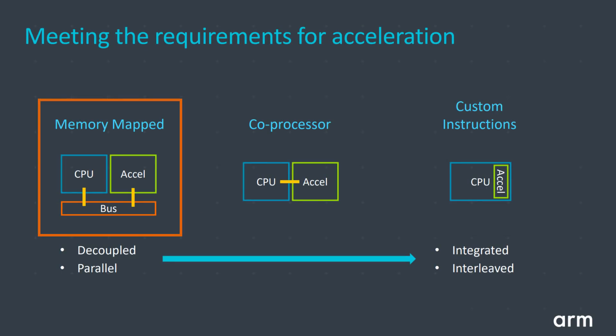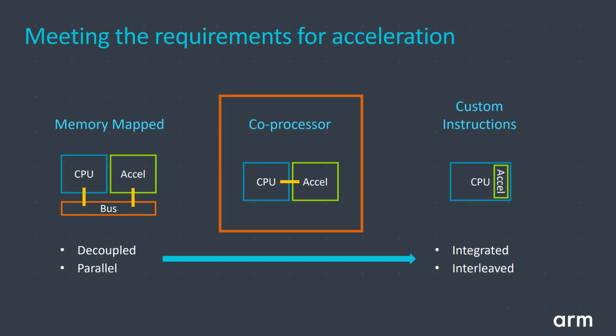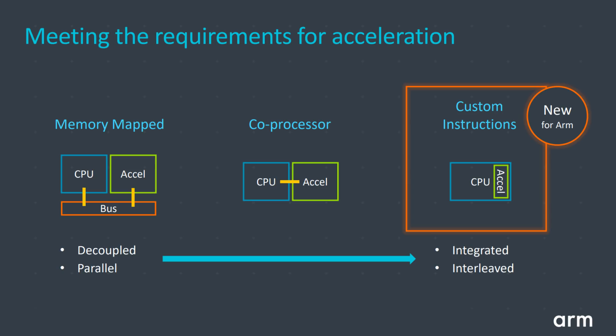One way they can talk is over a bus — data is transmitted over a bus, the other processor picks it up and knows what to do. There may be shared memory for passing data, which is probably how a GPU works in a PC or smartphone. Another way is a dedicated coprocessor set of instructions: 'Tell coprocessor one XYZ,' and the CPU talks to coprocessor one over some interface, which does something and comes back with a defined result. The third way is a custom instruction — you build the hardware and bolt it onto the side of the CPU.